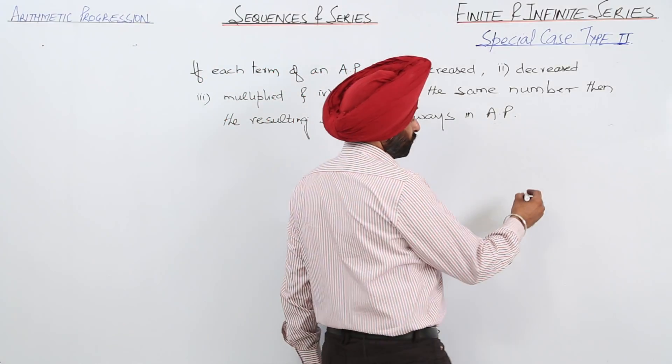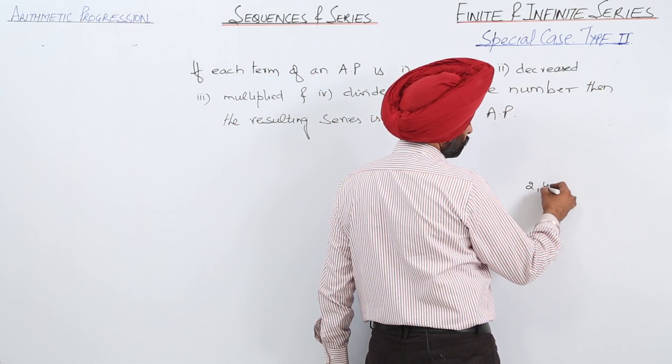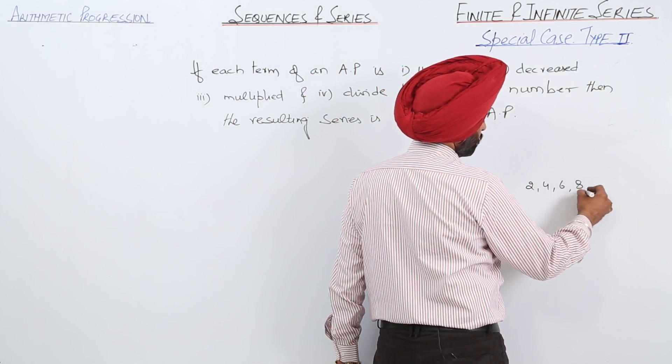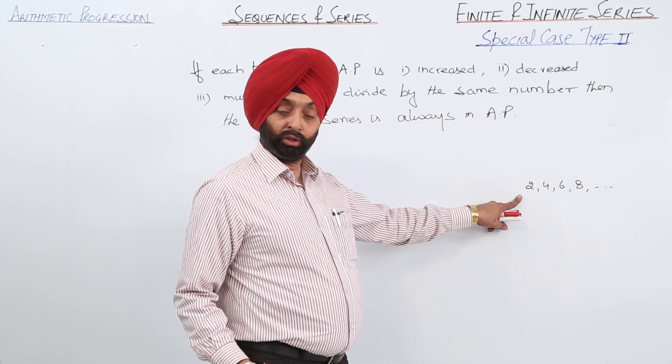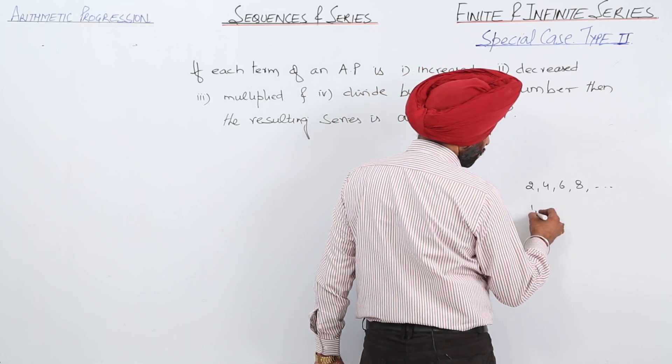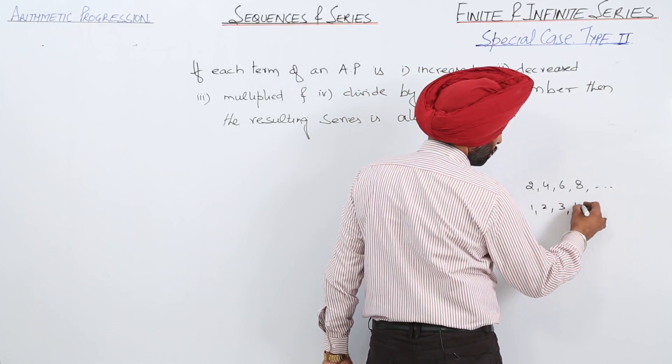For example, we have the series 2, 4, 6, 8 like this. If I divide this by 2, what's the result? Check it: 1, 2, 3, 4.